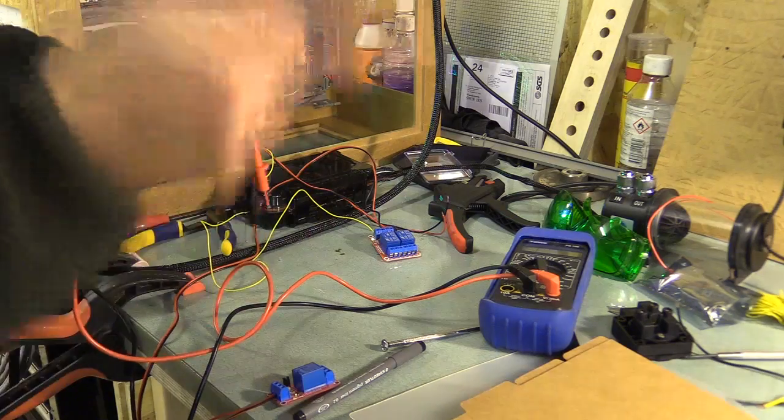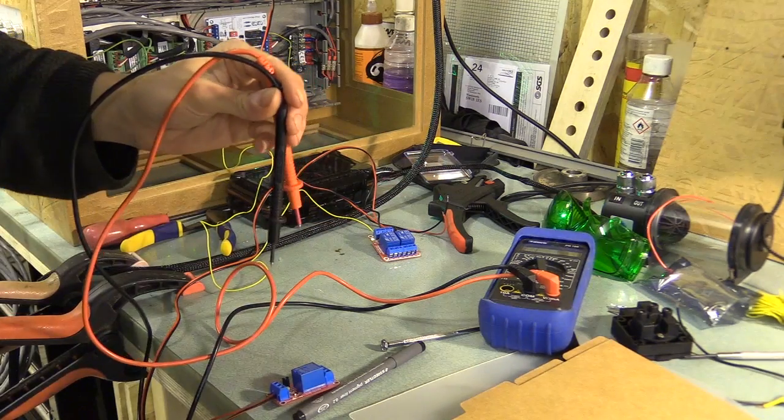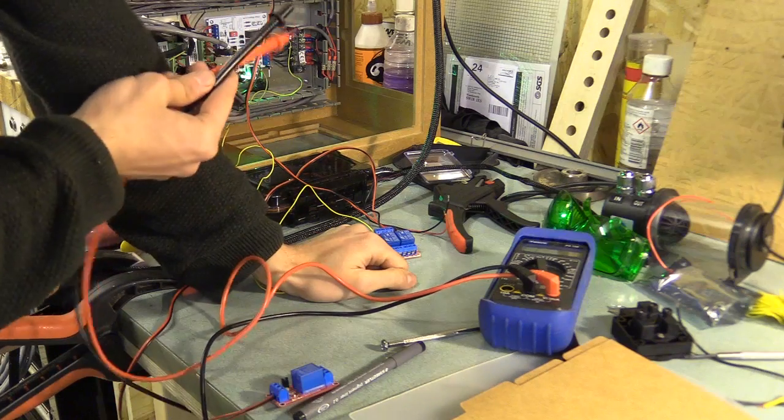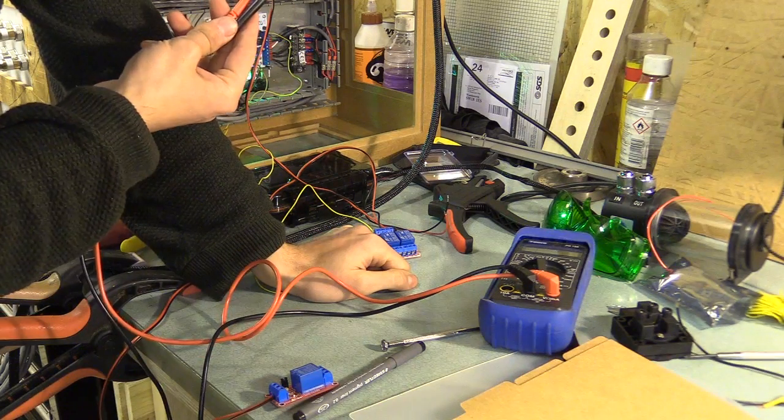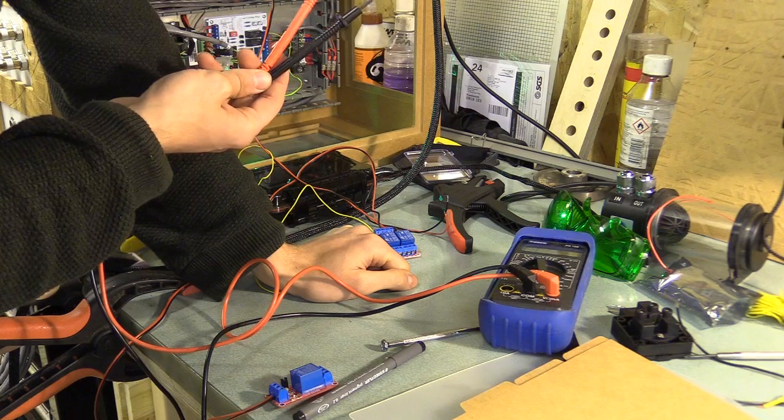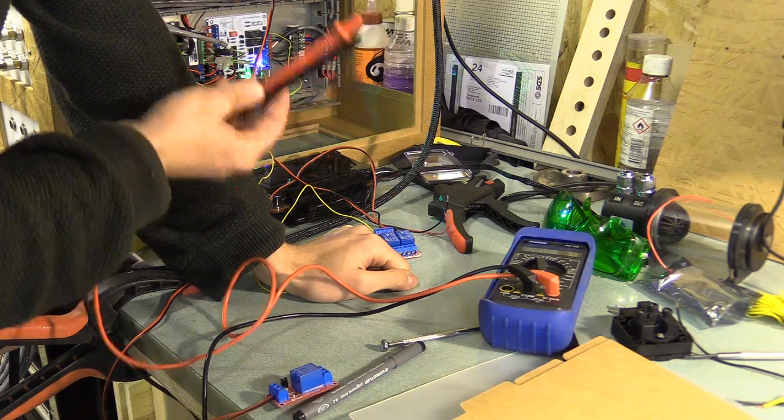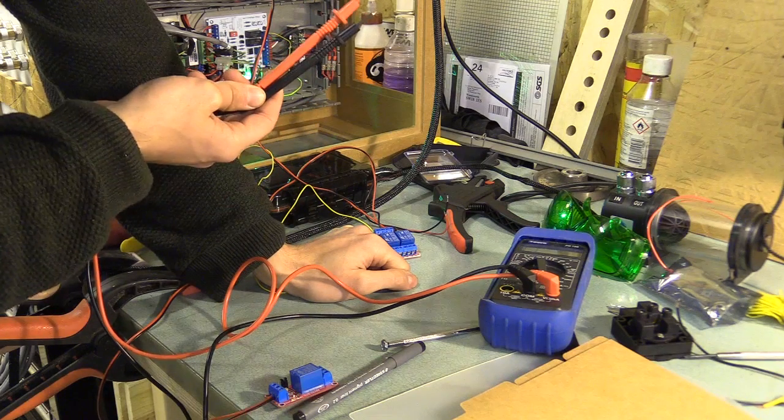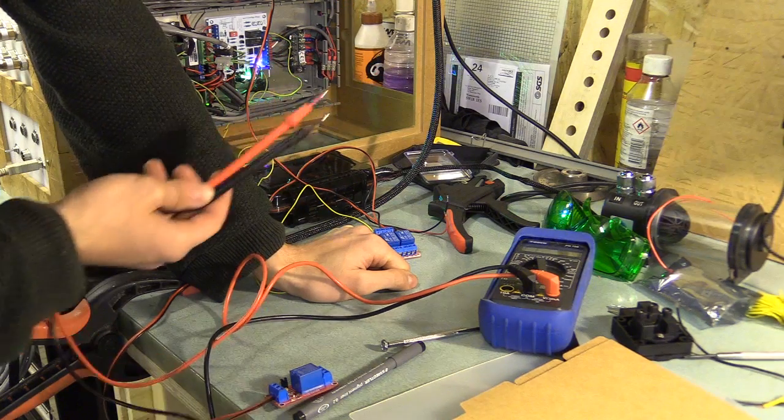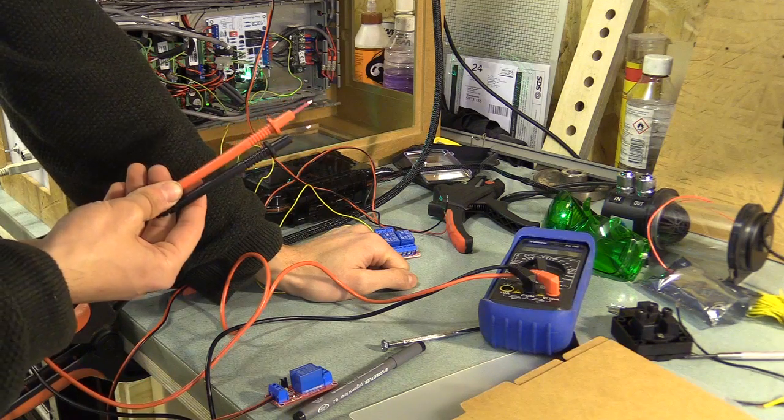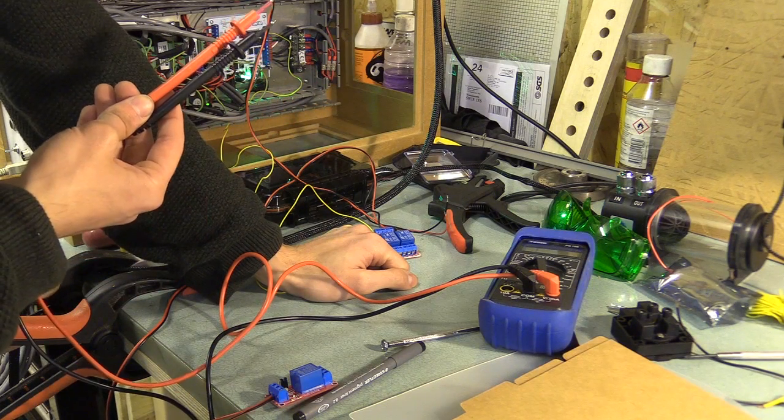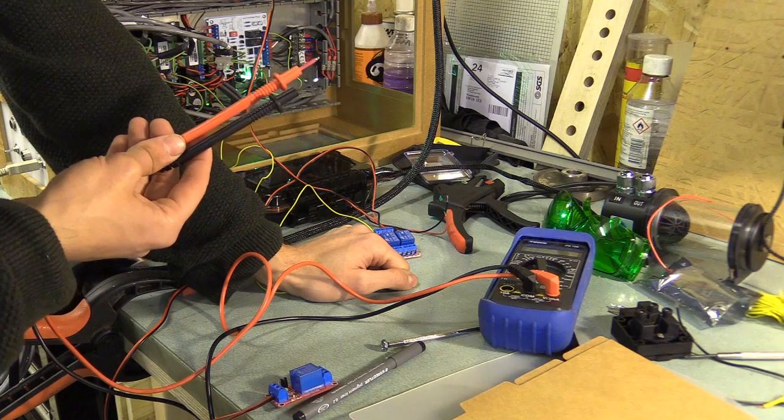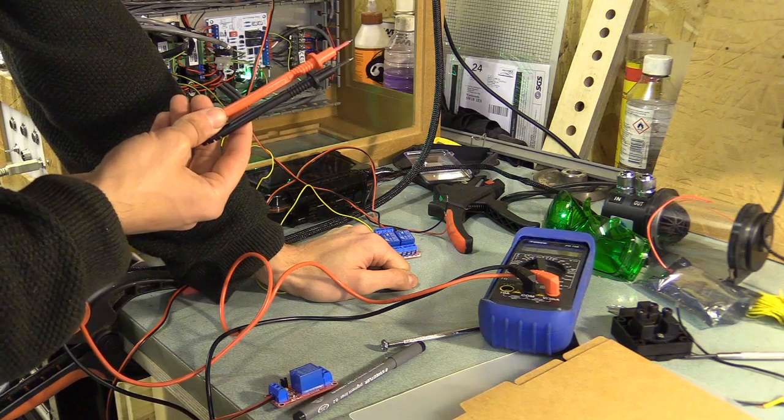I should also mention the difference between how the signals work from different parts of the controller, because at one point I assumed they all work the same way. The probe, the limits, the start hold and reset all use an active low. So you have a 5V signal going through the switches. When that goes to zero that means either the button has been pressed, the probe has been reached or the limits have been reached as well.